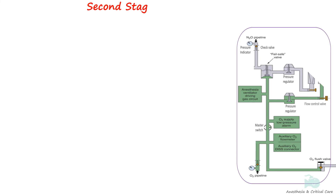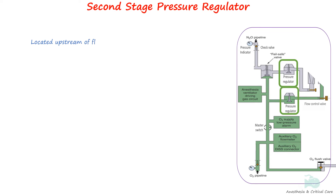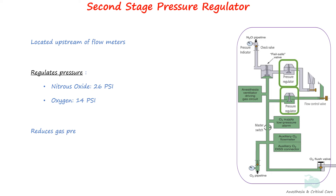Some anesthesia machines have pressure regulators in the intermediate pressure system just upstream of the flow indicators. These regulators reduce pressure further to around 26 psi (177 kPa) for nitrous oxide and 14 psi (95 kPa) for oxygen, ensuring that the pressure of gas supplied to the flow indicators does not fluctuate. The flow through flow meters remains constant when pressure remains constant.